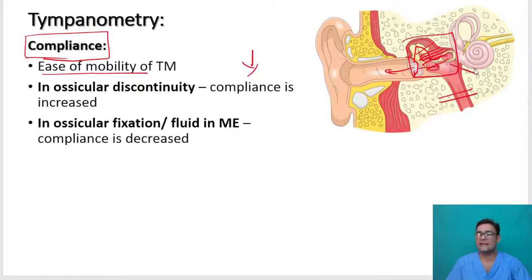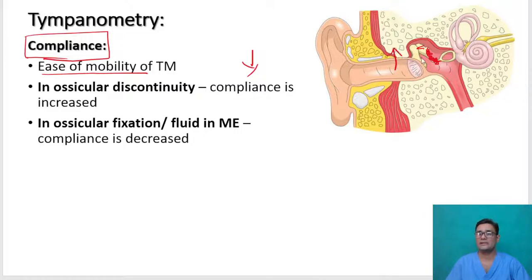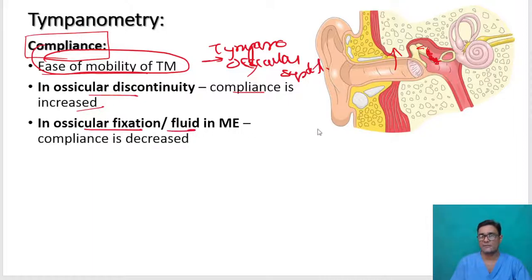Suppose the Eustachian tube is blocked — there is negative middle ear pressure. The compliance will not be good. Suppose there was a head injury and the patient had a dislocation of the incudo-malleolar or incudo-stapedial joint. In ossicular discontinuity, compliance increases — the ease of mobility of the tympanic membrane and tympano-ossicular system is increased. In ossicular fixation, fluid in the middle ear, or even Eustachian tube block, compliance is decreased.